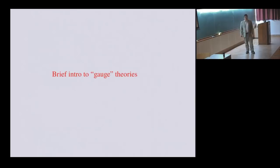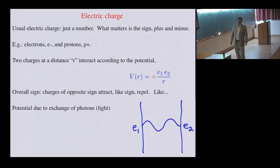I'm going to give you now a brief introduction to gauge theories. This involves the usual electromagnetism. We have electric charges, and they're just a number. What matters is the sign, is it plus or minus? And then it's an integer. So, for example, you have electrons, which are negatively charged, protons, which are positively charged. And at some distance R, they interact by the familiar Coulomb law. It falls off like one over the distance. The overall sign is such that charges of opposite sign attract, and charges of like sign repel. This is somewhat like my love life, but I won't go into that now. The potential you can view as being by the exchange of photons or light.